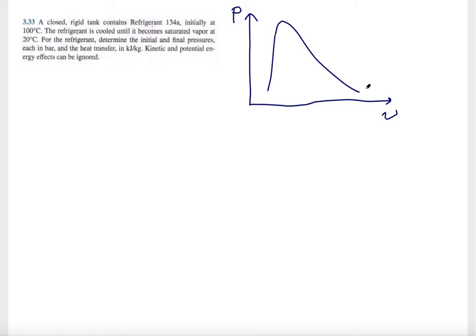The problem statement tells you the final condition is a saturated vapor, which should be on the right-hand side of the saturation dome. It also tells you it's a closed rigid tank, so this process must have a constant volume.